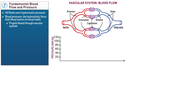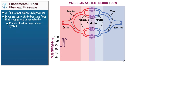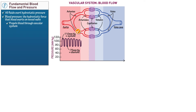Shade the graph to correspond with the vessels in our illustration. Blood pressure fluctuates between 110 mmHg and 75 mmHg until the blood approaches the arterioles, reflecting the fluctuation between ventricular relaxation (diastole) and ventricular contraction (systole). For a healthy young adult, 75 mmHg is the average diastolic pressure and 110 mmHg is the average systolic pressure.